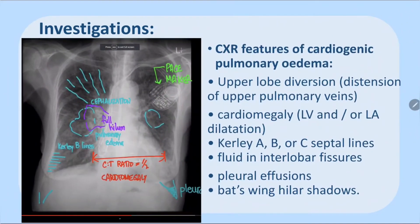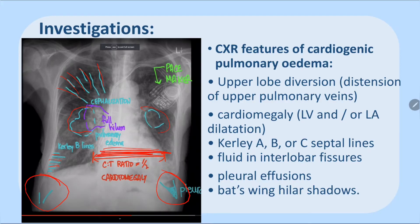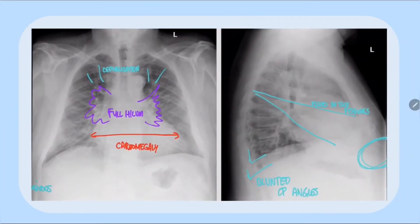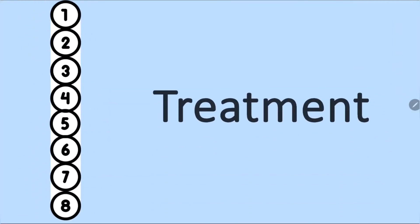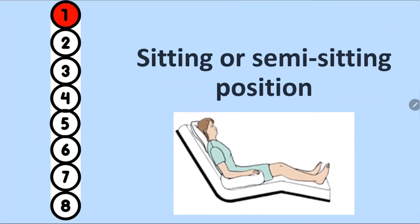Chest X-ray findings in heart failure include an increased cardiothoracic ratio of more than half, indicating cardiomegaly, a bat-wing sign, Kerley B lines, and congestion of pulmonary vessels. There may also be pleural effusions. All these changes help define heart failure.